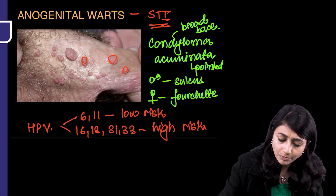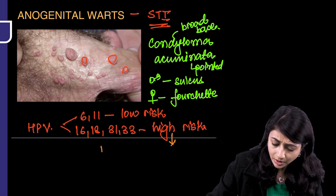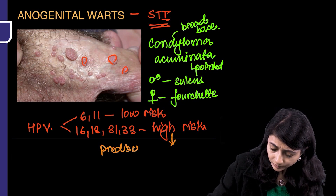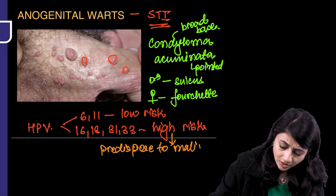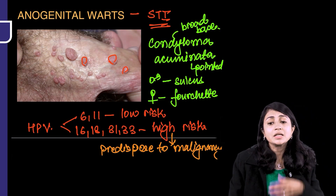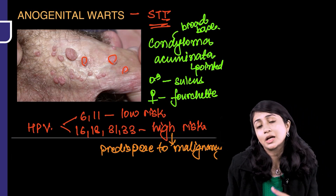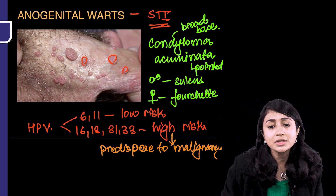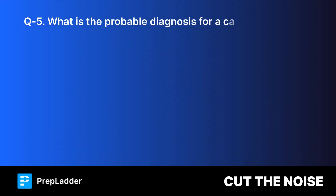High-risk HPV types can predispose to malignancies. That is why many people now do HPV typing, and HPV vaccines are available because this high-risk HPV can predispose to malignancies. Question 5: What is the probable diagnosis for a cauliflower-shaped mass on the foot of a farmer that appeared after a minor injury, with microscopy revealing copper penny bodies?